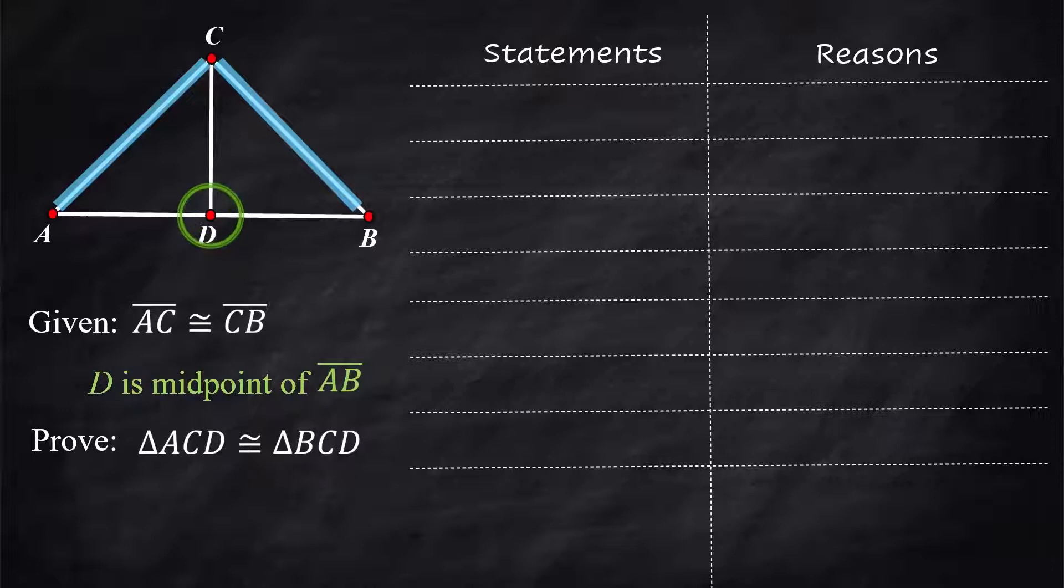Well you have to have an idea of what that means. D is splitting that bottom segment in half. A to D is the same length as the segment from B to D and we can use that. Then there's a third side going down the middle. They share that side so we'll be using that as well.